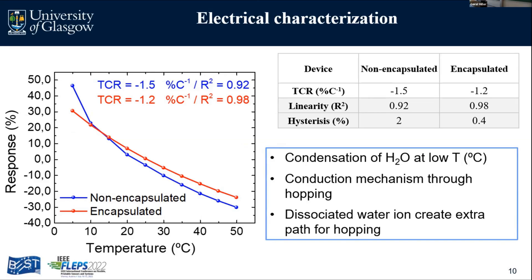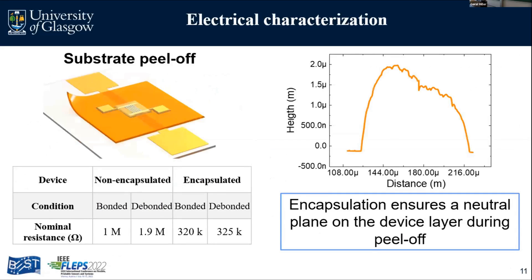We are still investigating why sensitivity is higher at lower temperatures for the non-encapsulated sensor. One possible explanation is condensation of water at lower temperatures — the water is being absorbed on the surface of our nanowires and they are associating, creating an extra path for hopping conduction, since the main conduction mechanism in vanadium pentoxide is polaron hopping. This is one possible explanation for these interesting results.